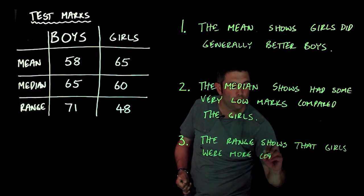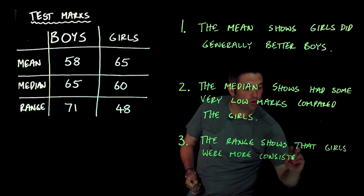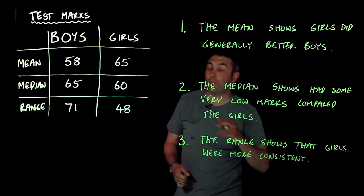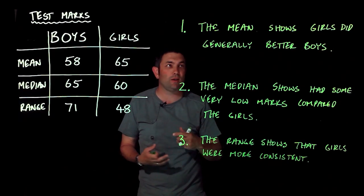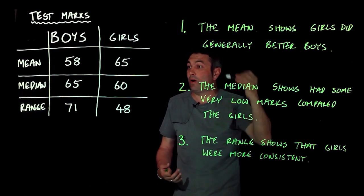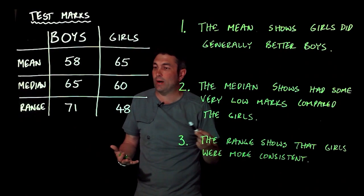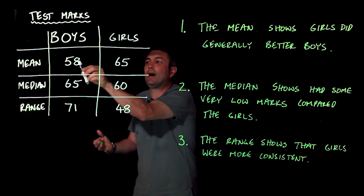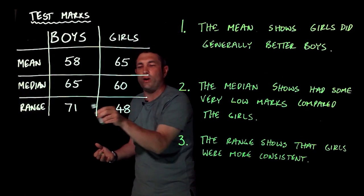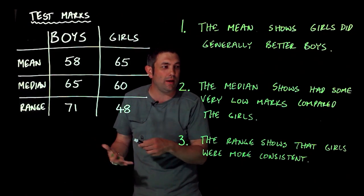So you're going to be looking at these sorts of questions, and you ought to be trying to compare an average and compare a range. You might not be asked for three, but you'll certainly be asked for two comparisons, and so you're looking at the numbers and explain why or how those numbers have come about and what they mean.